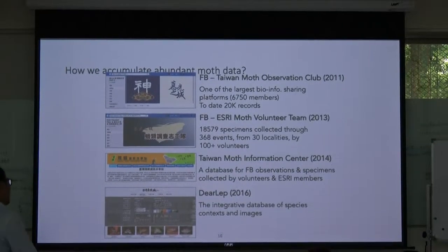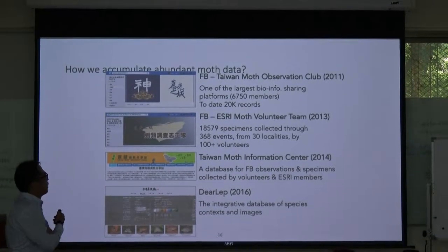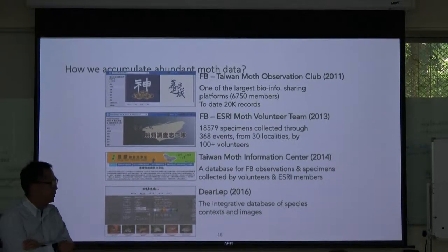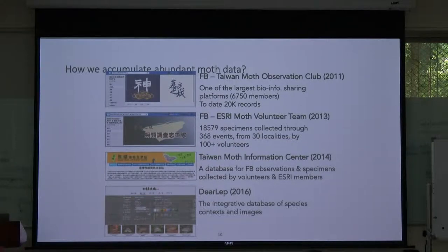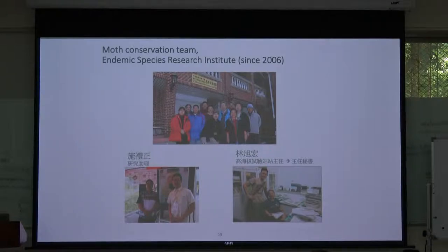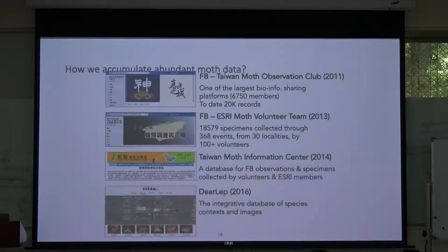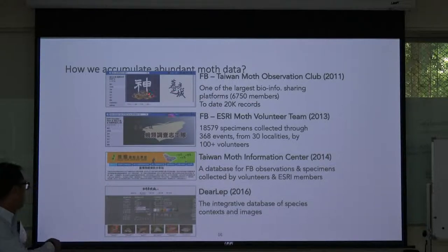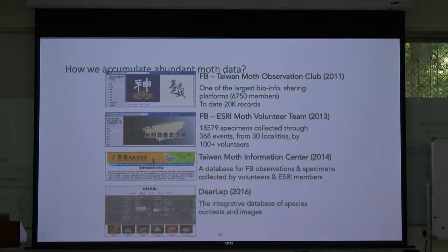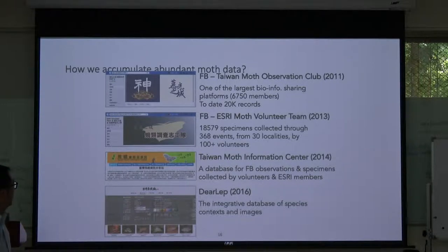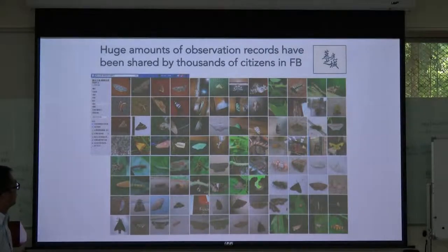Luckily, many people in Taiwan are interested in moths, so they have citizen scientists involved. There's a Facebook group and a dataset where volunteers can help collect data and take pictures. The colleague at the endemic species research center ensures quality. You can just take a picture when you see a moth, upload it, and their team will help identify the species. They've now accumulated over 20,000 records — actually more than that, a huge amount of data.